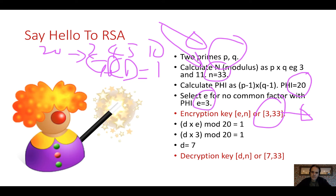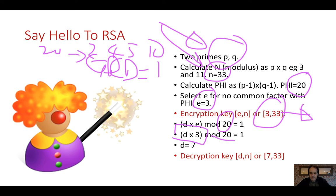Our first key is 3 and 33 — that's E and N, the modulus — and we send that to anyone who wants to encrypt data for us. Next, we calculate D, our decryption key, such that D times E mod phi equals 1. Trying values 1 through 7, we find that 7 works because 7 times 3 is 21, and 21 mod 20 equals 1. So our decryption key is 7 and 33.